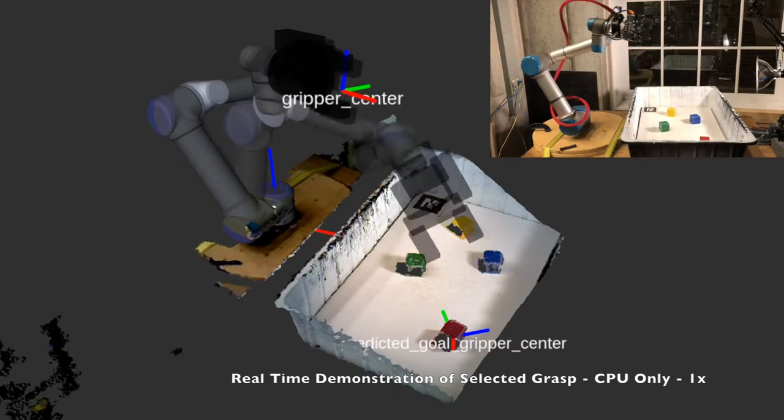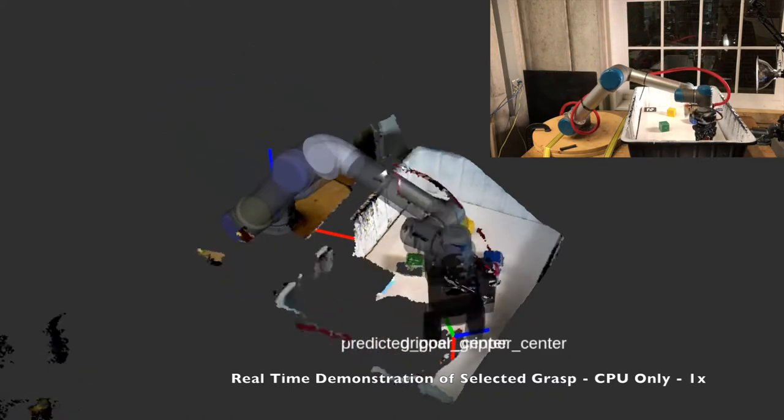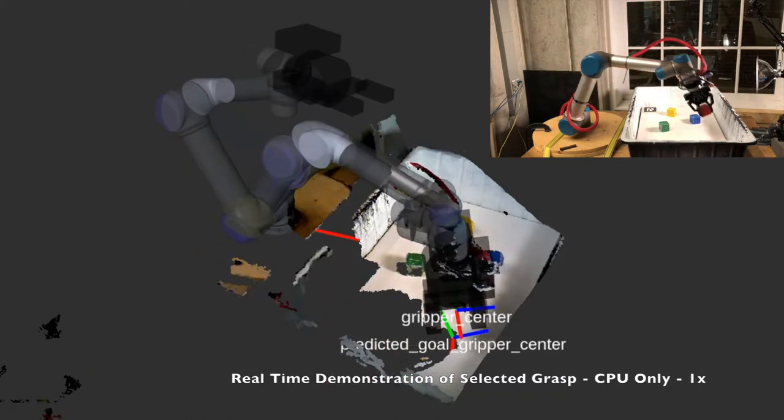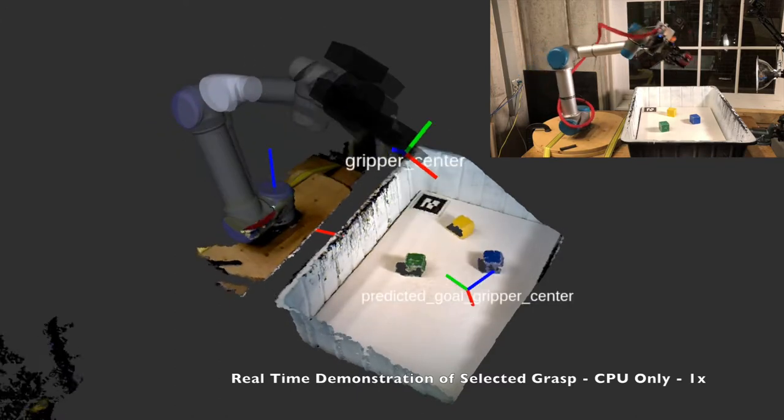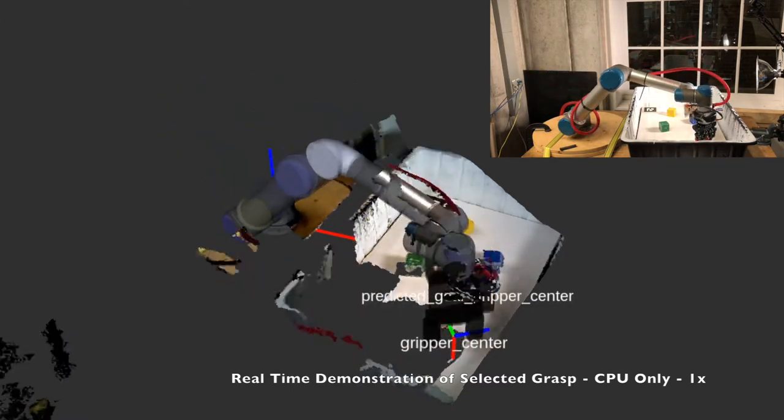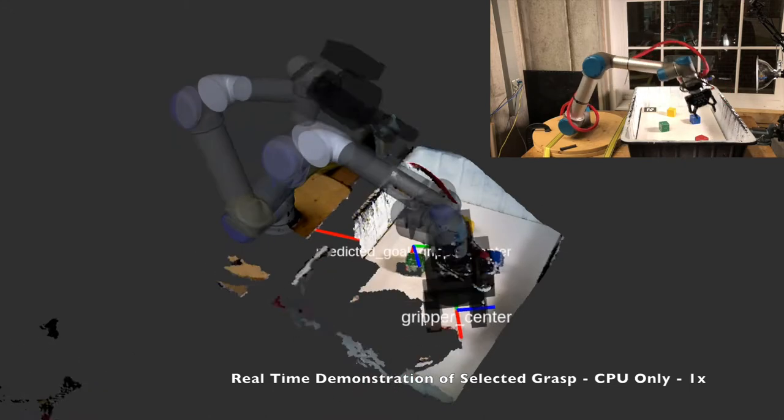Here is an example grasp with multiple blocks. Here, the action is locked to grasping the red block. Notice the change in pose estimates as the block leaves the scene. Our model is trained on success data only and thus cannot account for this situation.